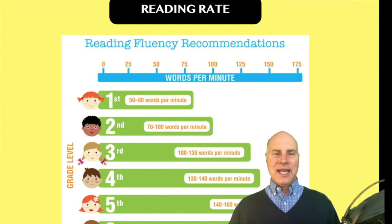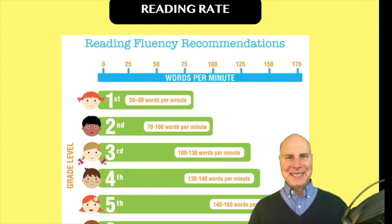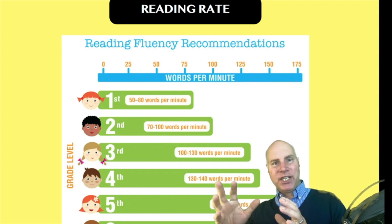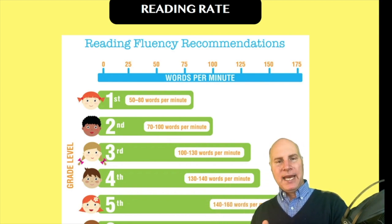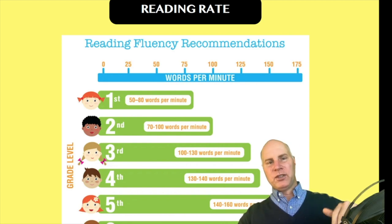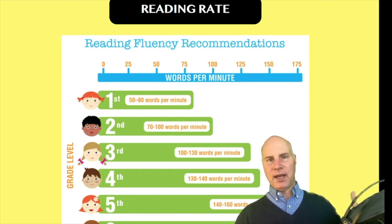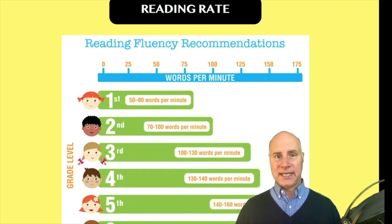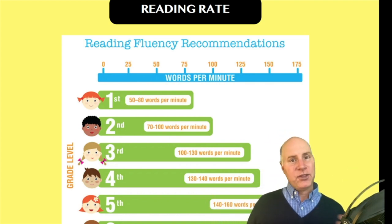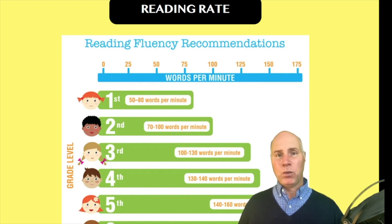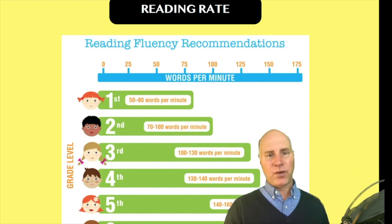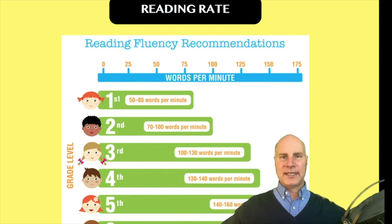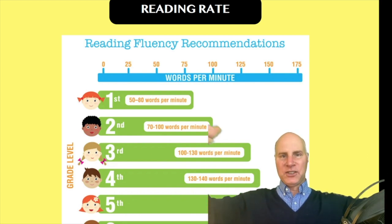Reading rate is the moving target — the one that is constantly changing from grade to grade. If a student is reading on a second grade level at 90 words per minute, that was great for second grade. But in third grade, if they're still reading at 90 words per minute, it means they're behind. This is constantly increasing as the grades go.